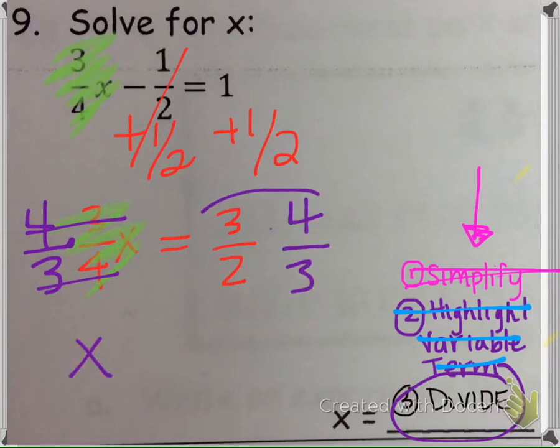And then here we'd have 12 over 6, which is just 2.